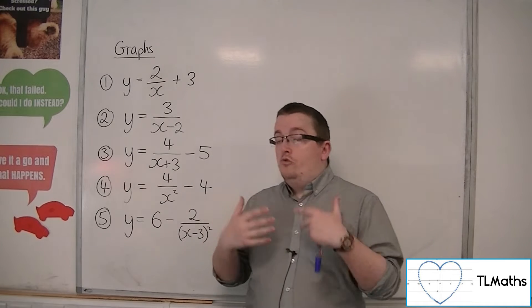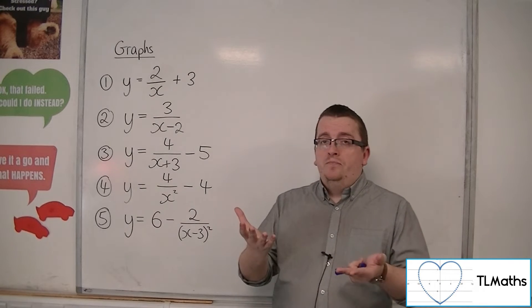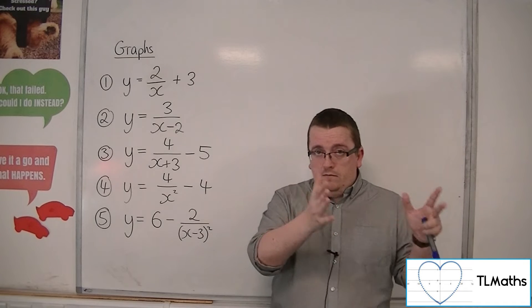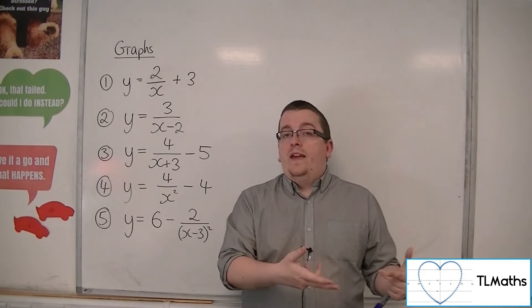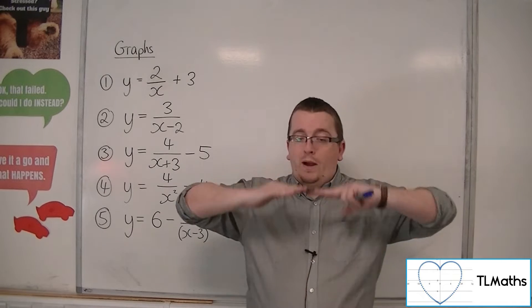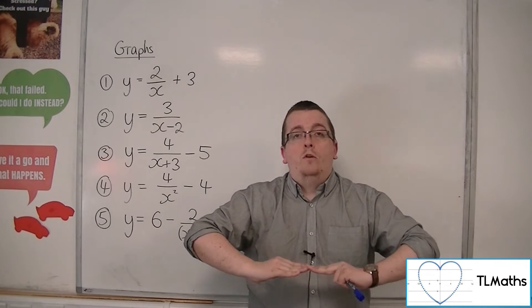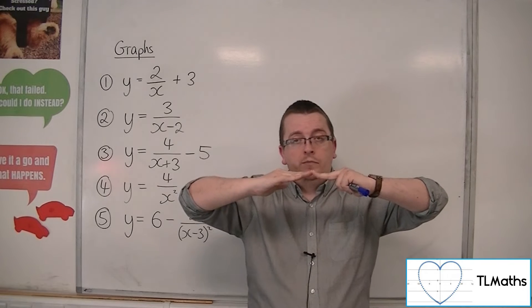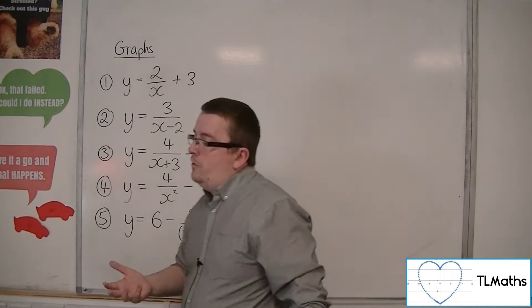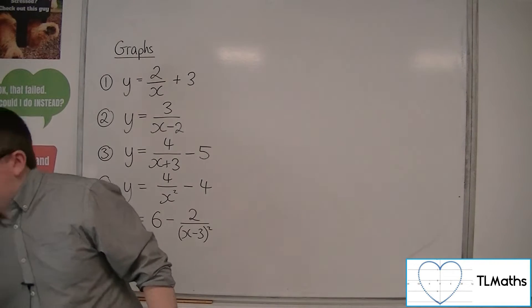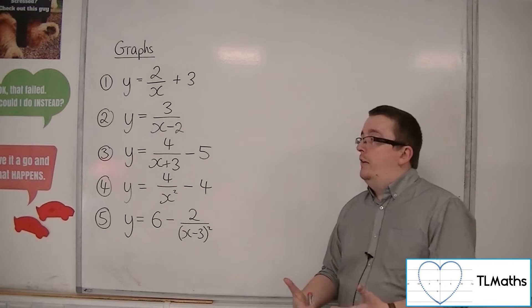If the graph has been moved up 10 — so you've added 10 to the y values — then if you have an asymptote at the x-axis, it too will move up 10 units. So if we draw the asymptotes first, then we can draw our graph around them.